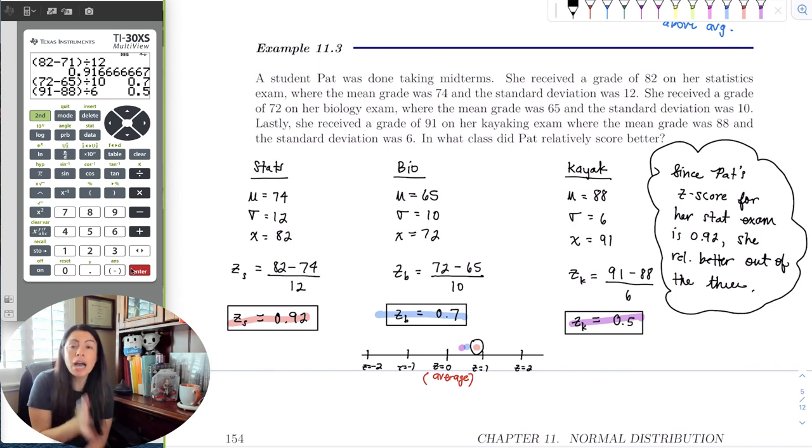So we would say since Pat's z-score for her stat exam is 0.92, she did relatively better on that exam out of the three. So when you want to compare distributions, that's what you do. You take the distributions, find the z-score for the value you want to observe in your data, and then put them on a number line and see which is the farthest negative or the farthest positive. We could see that with the kayaking exam, we assumed it was going to be that because she scored an A and the mean was already high. But notice because the mean and standard deviation weren't too far from each other, that had the smallest z-score out of the three. In stats, the mean was 74 and she did much farther from the mean in a positive direction, and that spread was larger, so it became the largest z-score. But at least now we can rewrite these data values in a standardized way where we just look and compare. We don't have to say, well, the kayaking this and that - we just calculate the z-score and then we can compare.